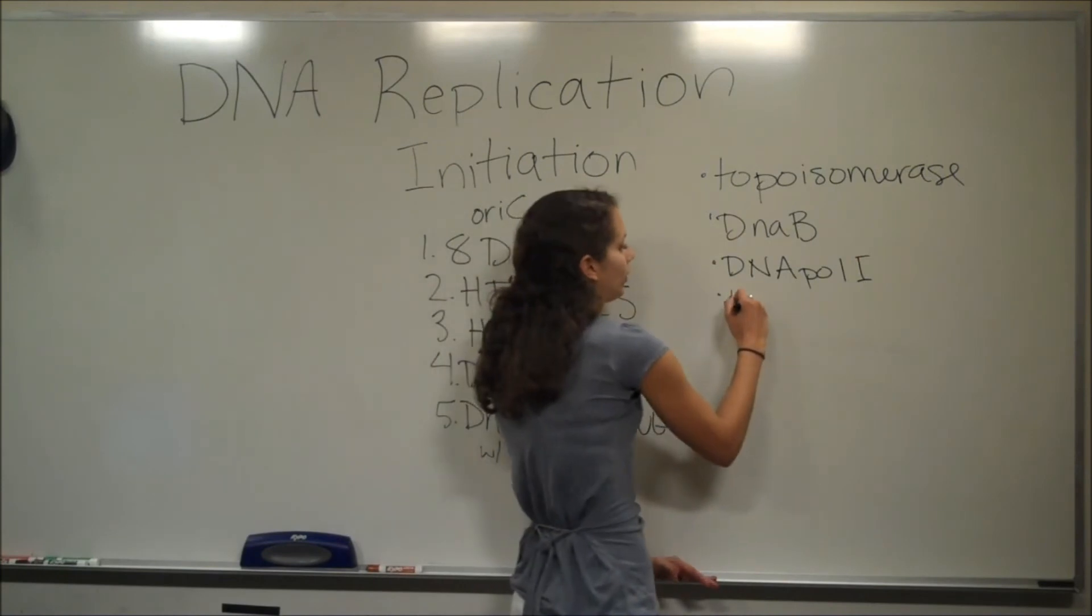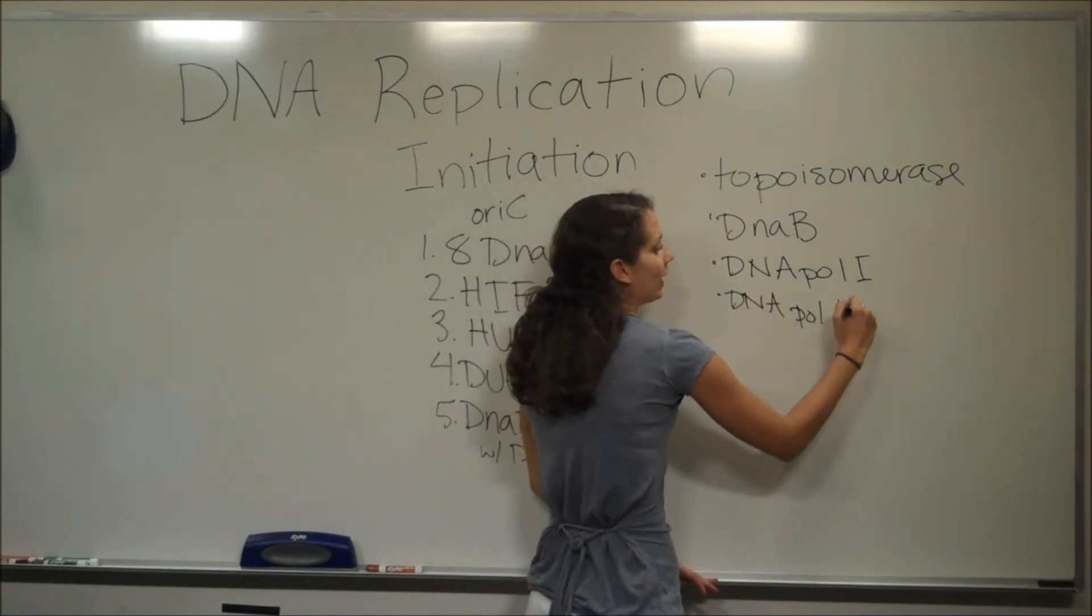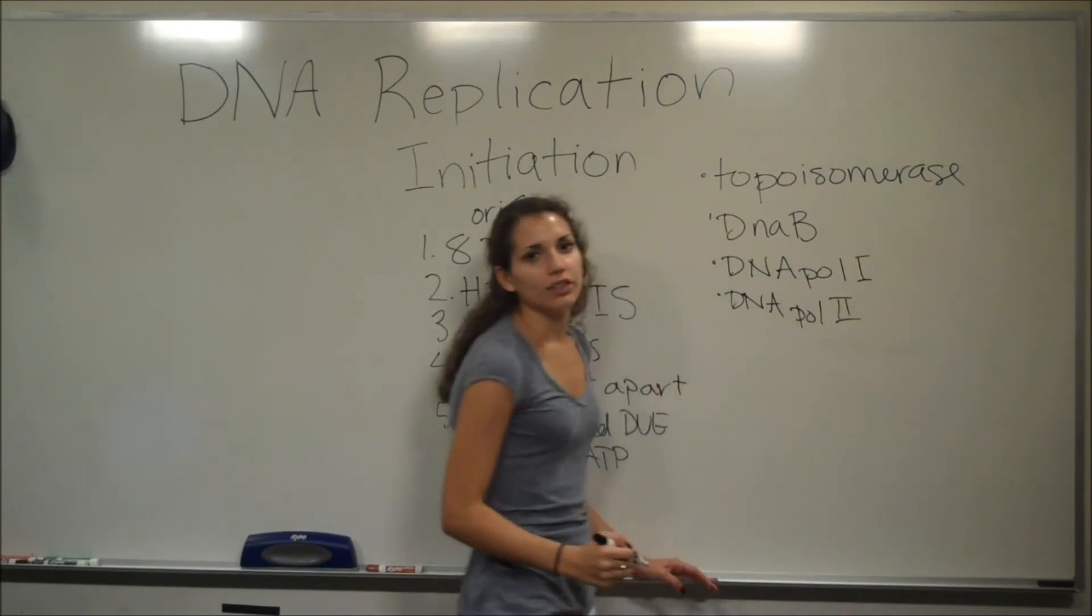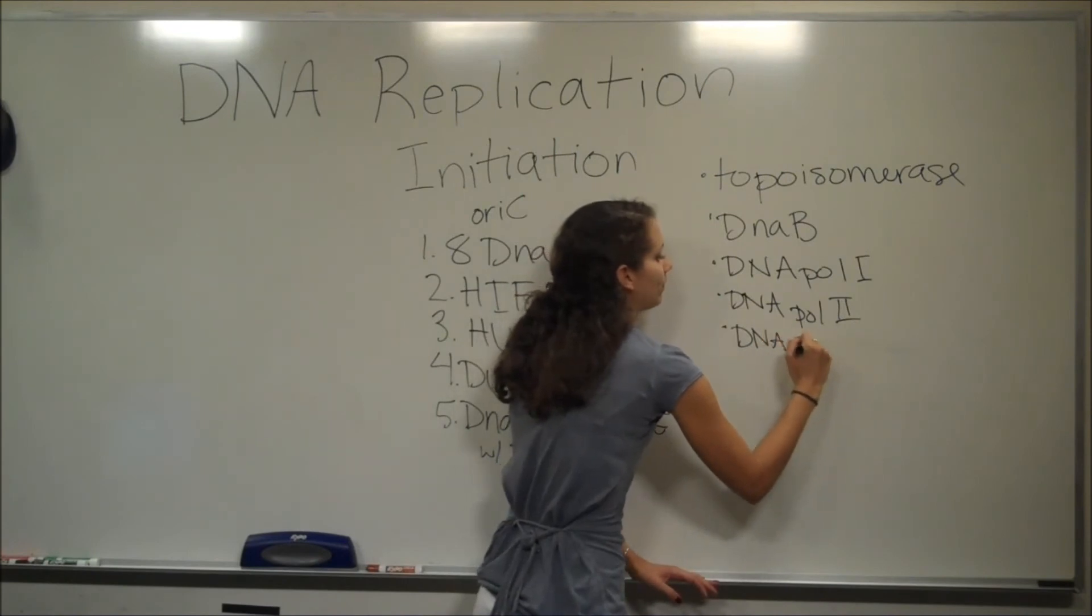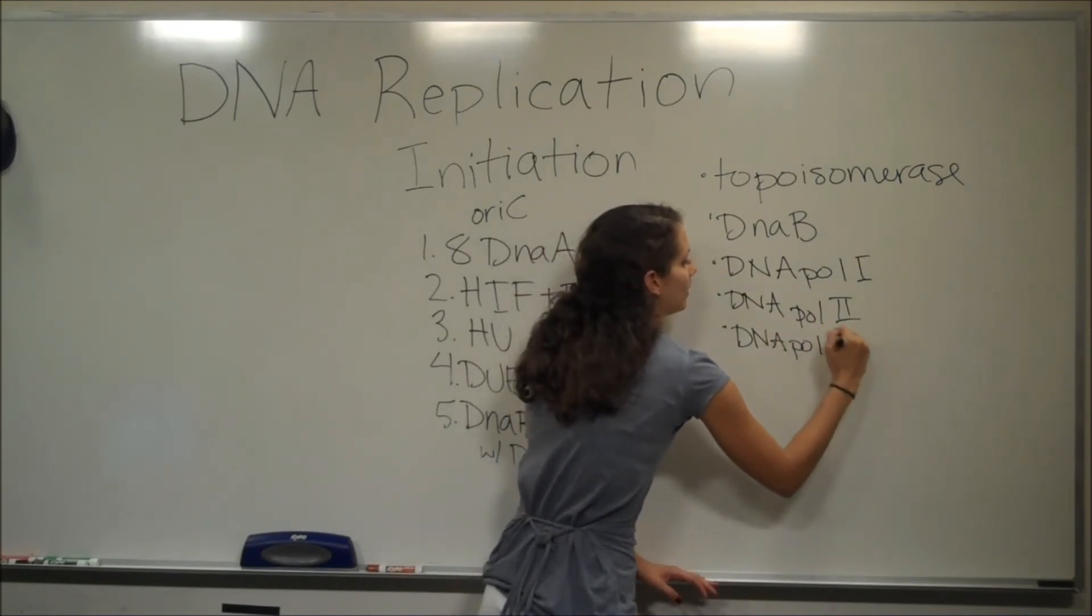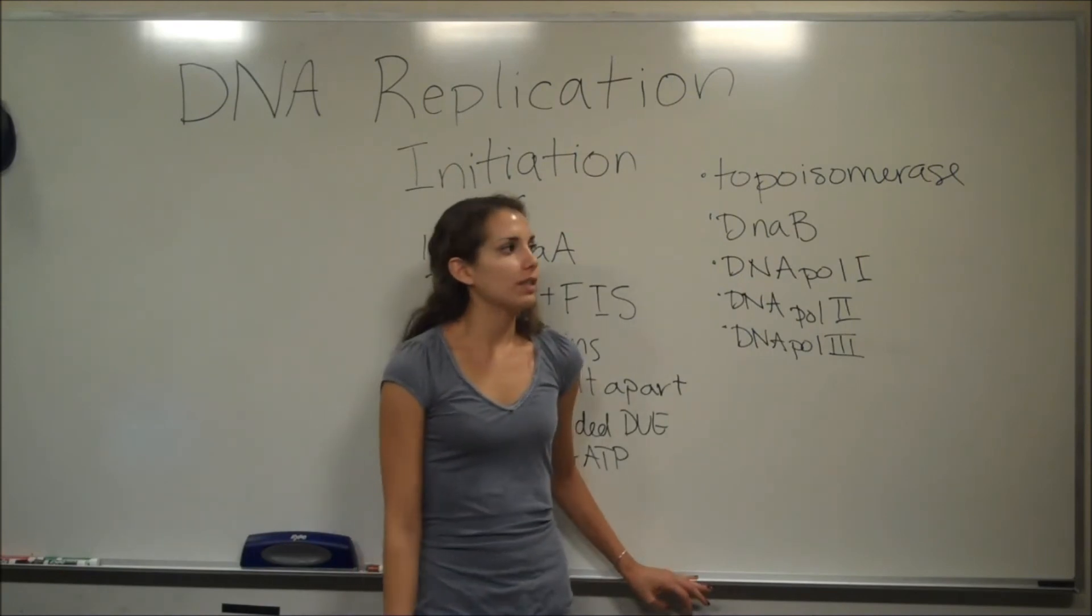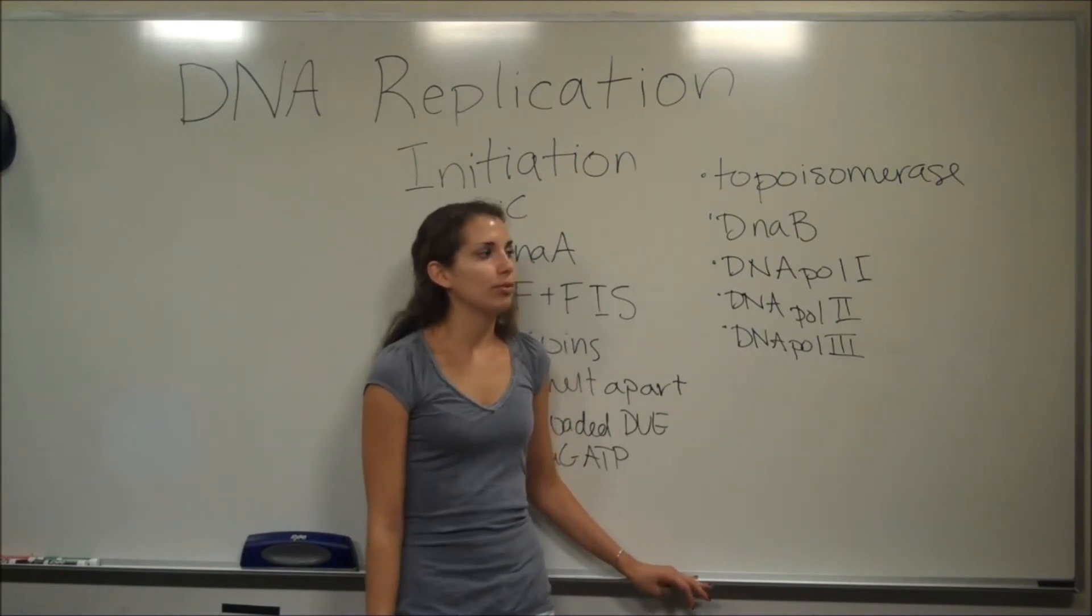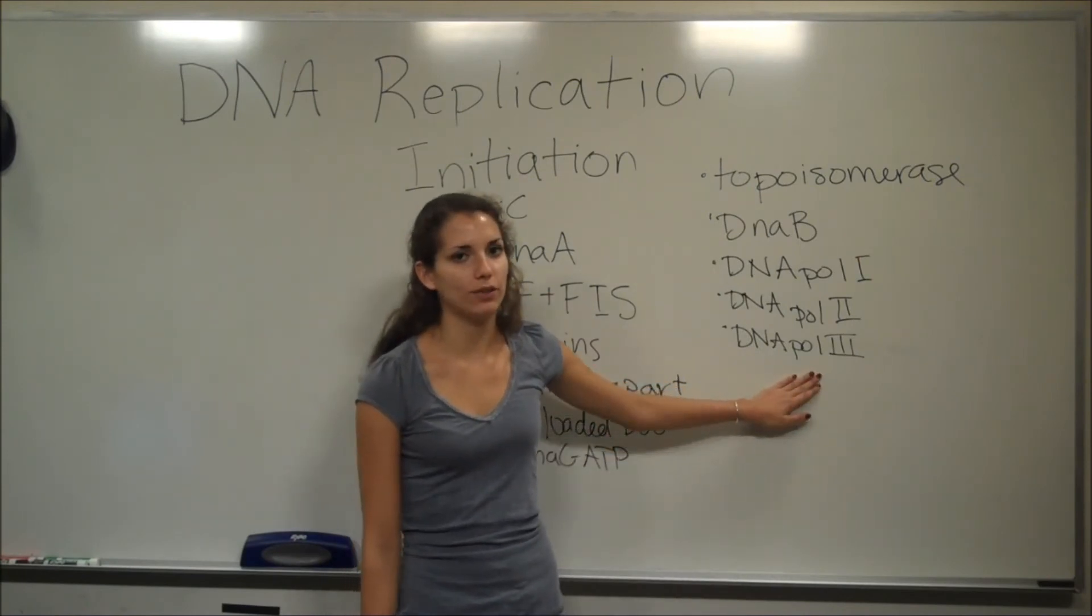DNA polymerase 2 is involved in DNA repair, and we're going to go over that a little later on in the video. And we also have DNA polymerase 3. And this is the one that you probably learned the most about. It's the most involved with DNA replication and also proofreading. It's very important to know that DNA polymerase 3 has a 3' to 5' exonuclease activity.